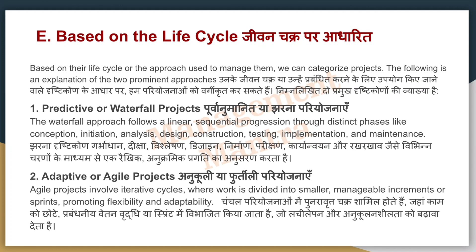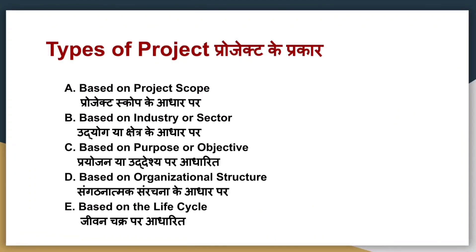In this video we have seen types of projects on 5 bases: first, project scope — small, medium, large; second, industry — IT, construction, healthcare, marketing and advertising; third, purpose and objective — research and development, implementation, maintenance and support; fourth, organizational structure — functional, matrix, projected; and fifth, life cycle — predictive/waterfall and adaptive/agile. Please like, subscribe, and comment. Thank you.